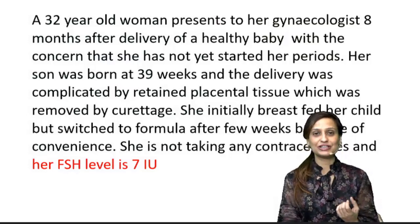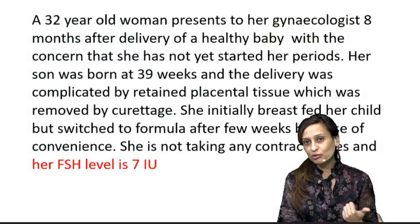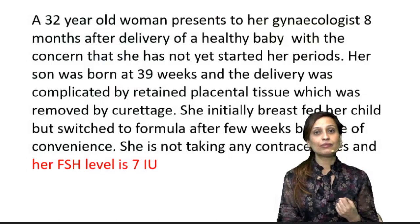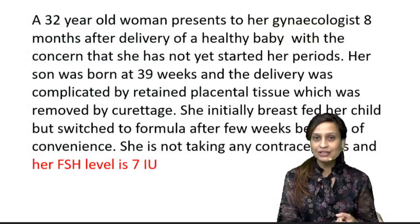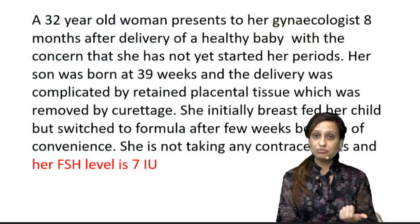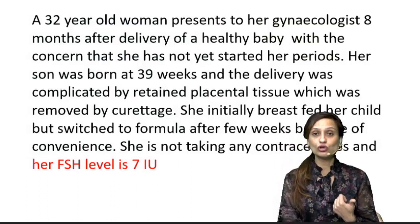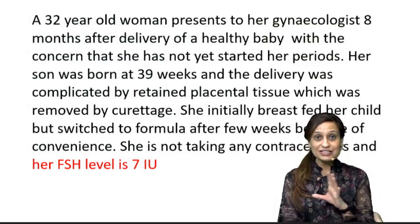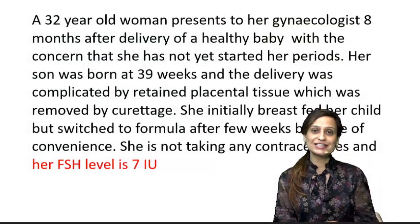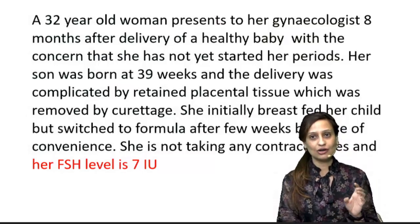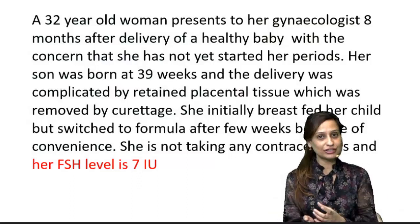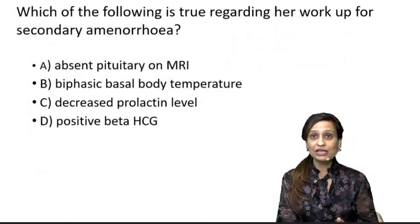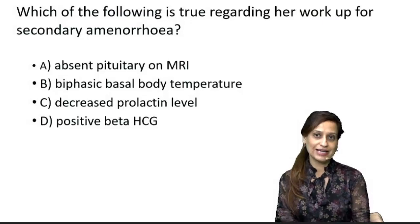To recap: we have a woman with secondary amenorrhea following delivery. History is positive for curettage. She was able to breastfeed initially, so there was no failure of lactation, although she switched to formula feeding soon after. Her FSH value is 7. So although the MCQ was 6–7 lines, there are only 4–5 keywords. We put them together and approach the question, which asks: which of the following is true regarding her workup for secondary amenorrhea?